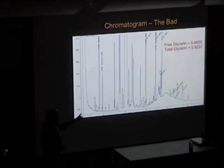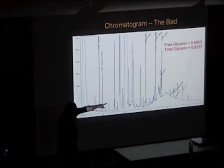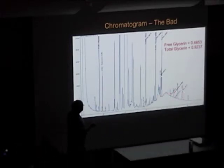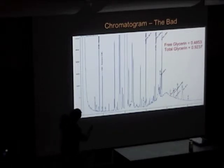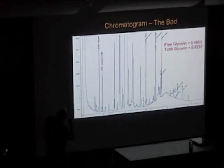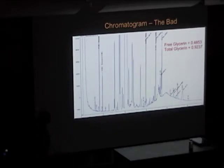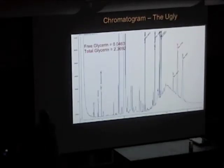The point is you don't need to understand much more than you can see now to recognize that these peaks represent unreacted oil — triglycerides. These represent partially reactive oil because you only knocked one of the three fatty acids off. Our monos are high. And here's the glycerin — total glycerin of 0.92. This is unwashed fuel. When I got that sample, it was obvious: this is bad. And then, the ugly.